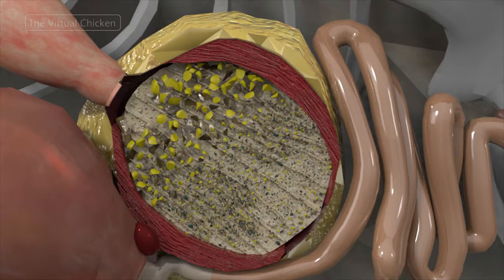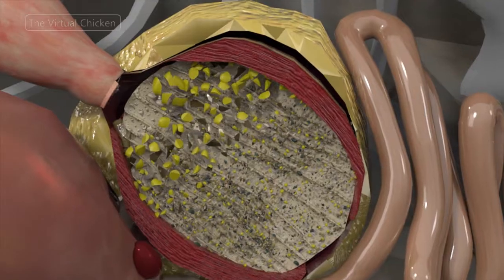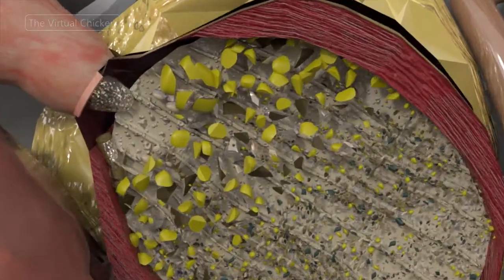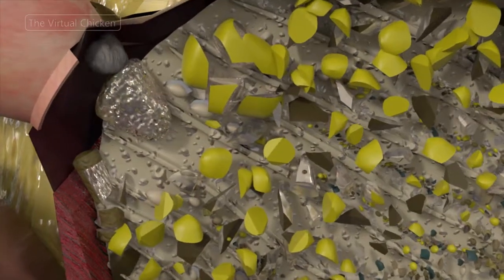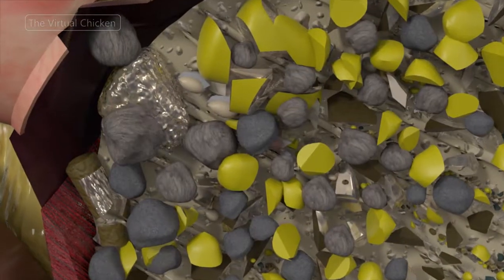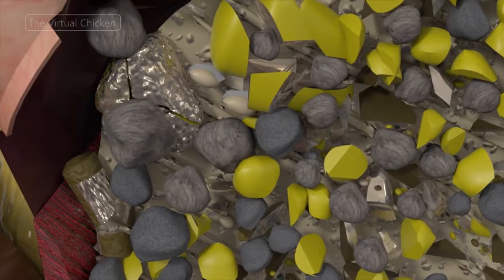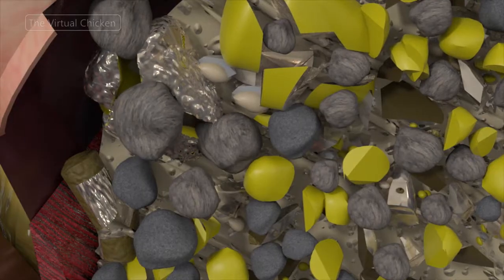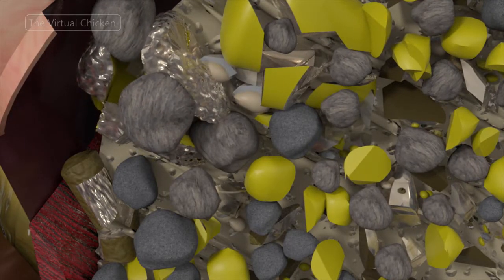Though the gizzard consists of very powerful muscles, it alone can't pulverize everything the typical bird eats. Grit and small rocks are picked up as birds peck and feed. This mineral matter accumulates in the gizzard and the particles help pulverize the seeds and grain.